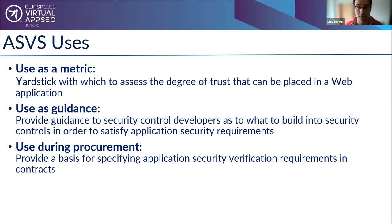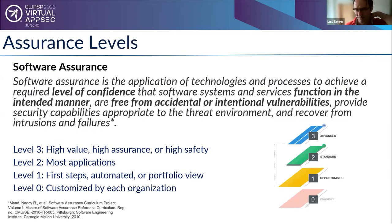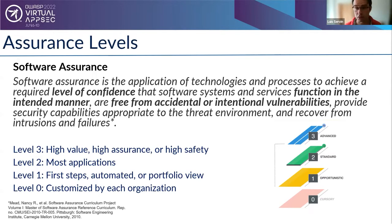The most important concept is software assurance. This measuring stick gives us assurance that we can use a system for its purpose, that it will function as intended, is as free from vulnerabilities as possible, provides security capabilities adequate to the threat environment and business demands, and will recover from or alert about intrusions and failures. This is the definition of software assurance from Carnegie Mellon, and it has been mapped within ASVS in four levels.